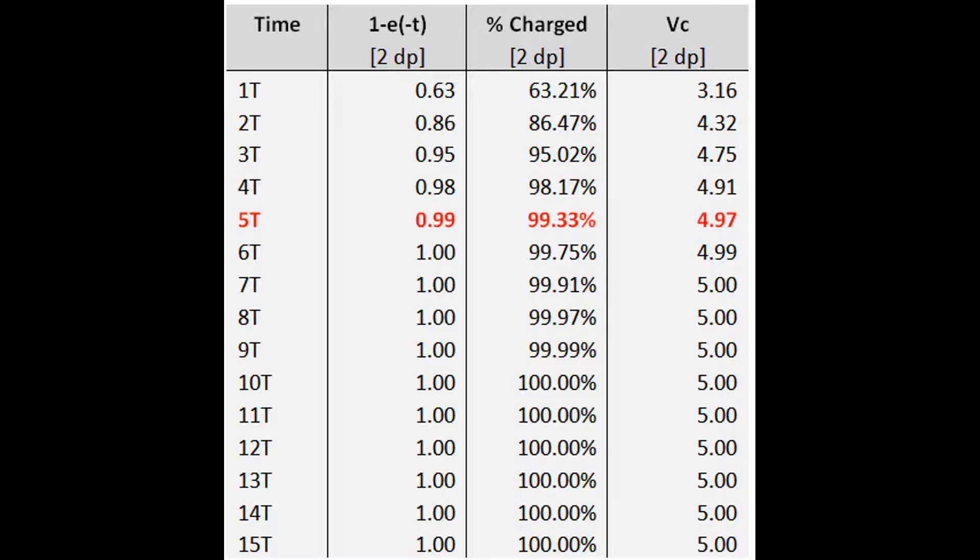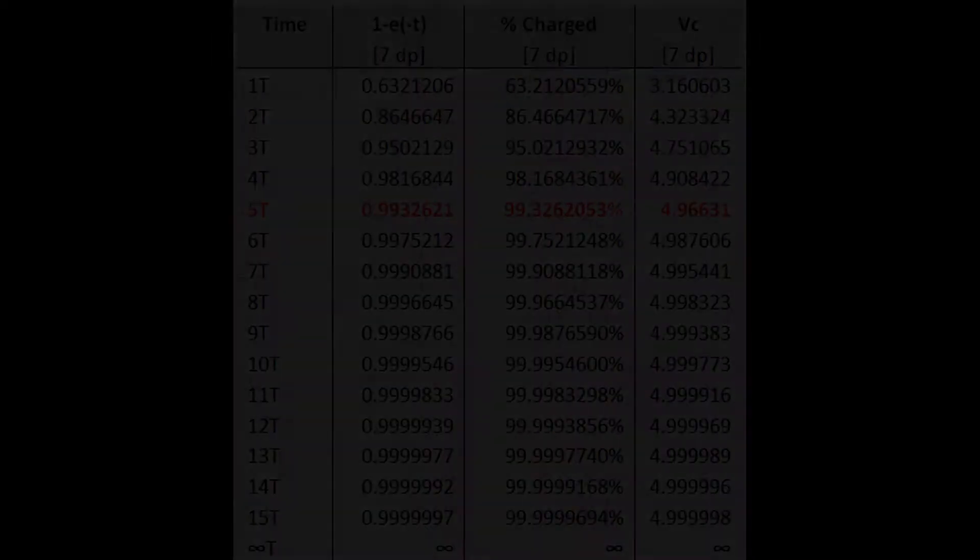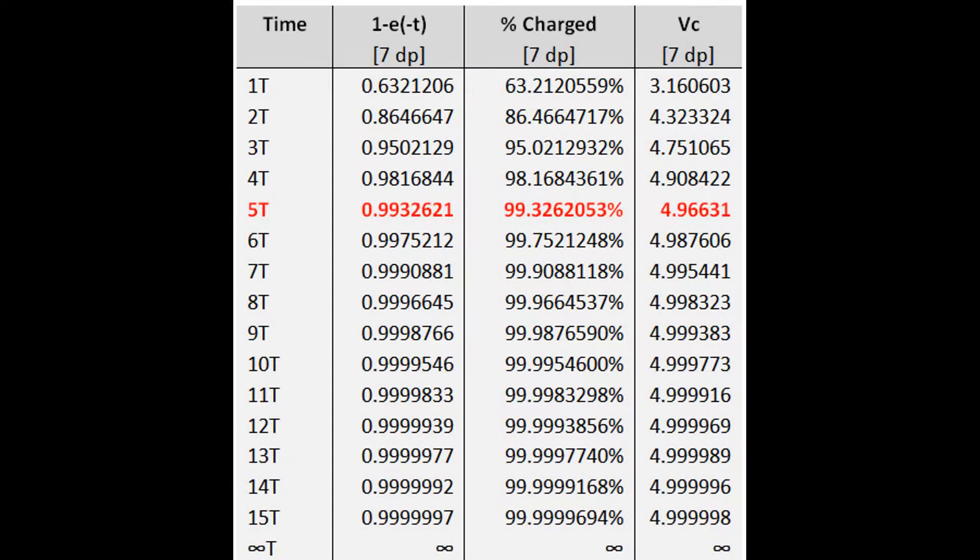However, this is very misleading. We are only going to 2 decimal places. Let's change this to 7 decimal places. Now we can see even after 15T the voltage across the capacitor is still increasing. In fact the time it takes for VC to meet VS is infinity.